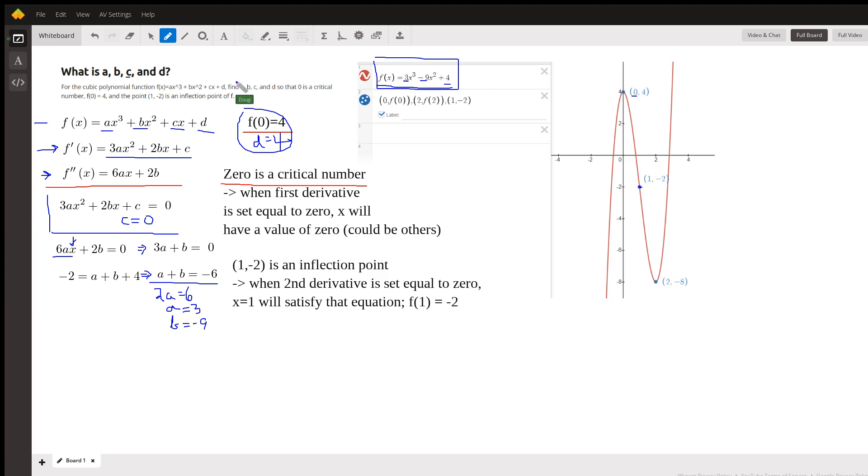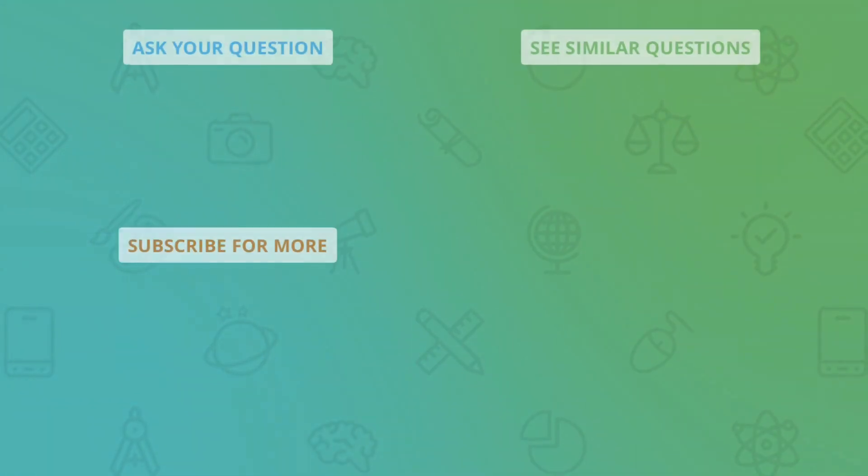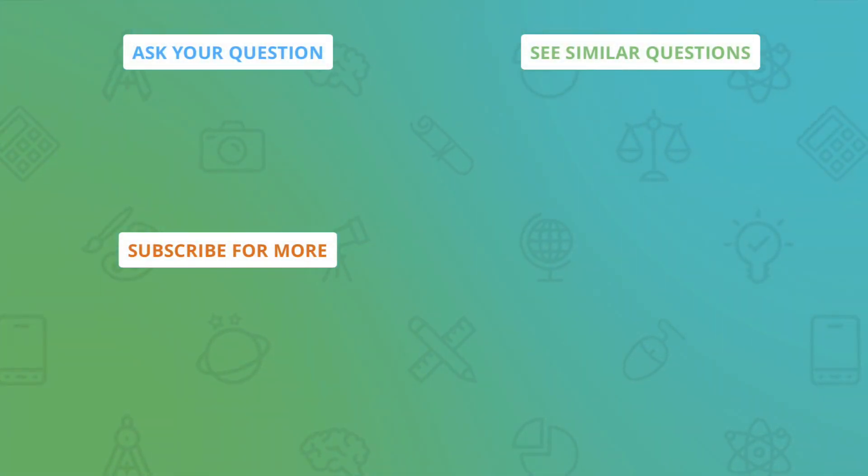And if you do set the first derivative equal to 0, you get critical numbers. One of them is 0 and one of them is 2. So there's also a local point at x equals 2. I really hope that helped. If you have any questions, post a comment.